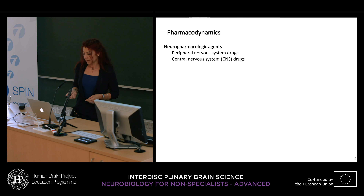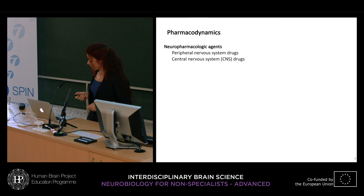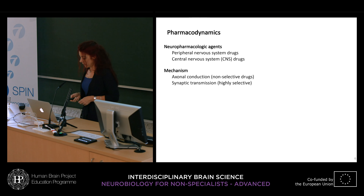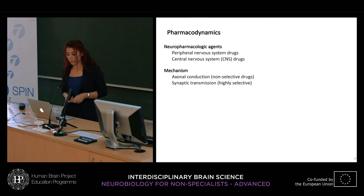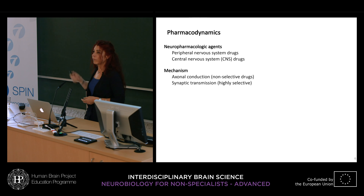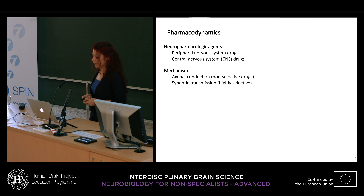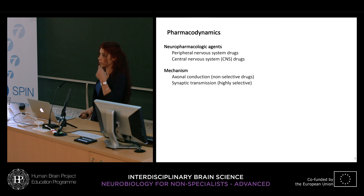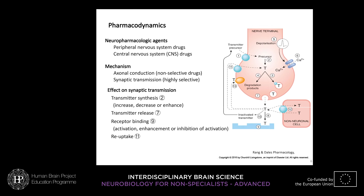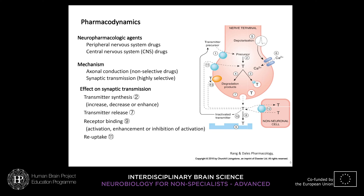When drugs deal with the nervous system they are called neuropharmacology agents, and they can modulate the peripheral or central nervous system. The mechanism of action can be through modulating axonal conduction — in which case drugs are quite non-selective because axons in neurons are similar, as with some local anesthetics — or they can modulate synaptic transmission, in which case they are highly selective drugs depending on which population of neurons or receptors are affected.